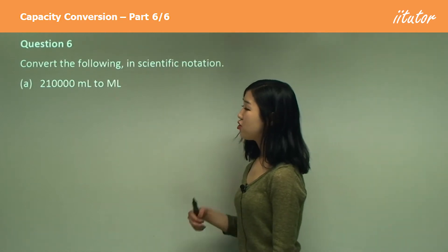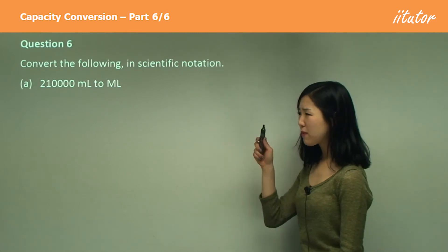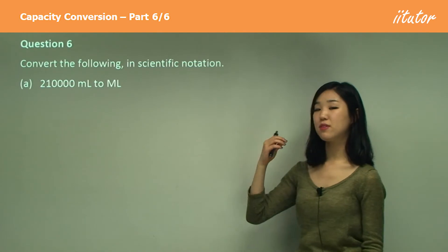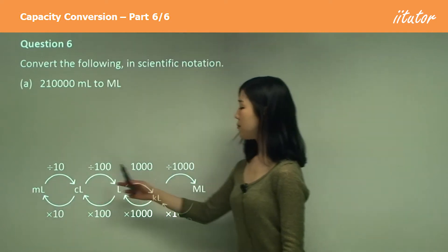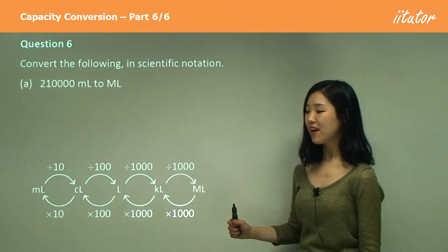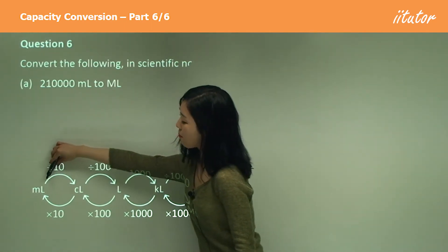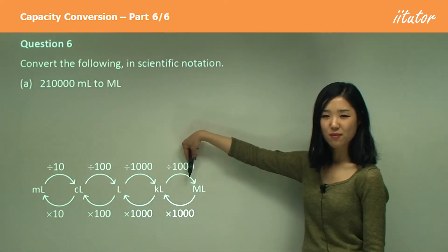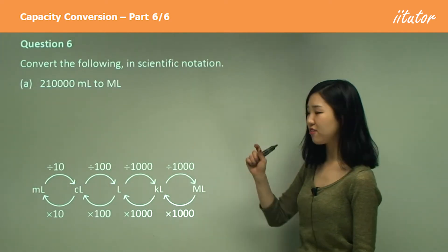210,000 millilitres to megalitres. Don't get confused with the little m and the large M — little m is millilitres and large M is megalitres. Millilitres to megalitres is going from the very smallest to the very largest, so we must divide. We divide by 10, then a hundred, then a thousand, and then a thousand again — so there'll be lots and lots of zeros. Be extra careful with the zeros.